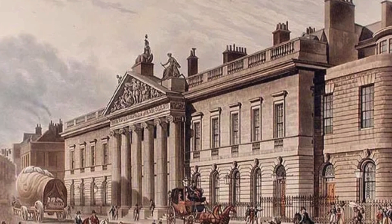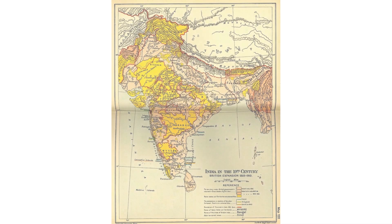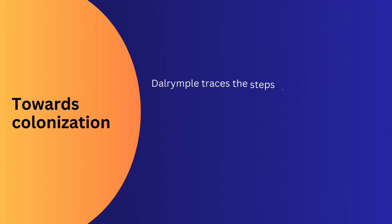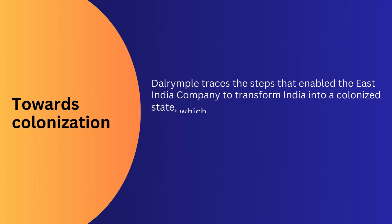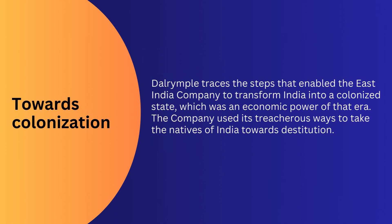William Dalrymple has brought to the fore the origins and history of how the East India Company spread its wings of influence and domination over the subcontinent. In his interesting narrative, Dalrymple traces the steps that enabled the East India Company to transform India into a colonized state, which was an economic power of that era.